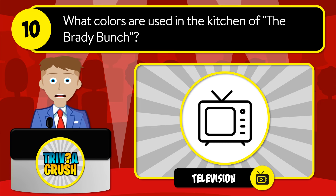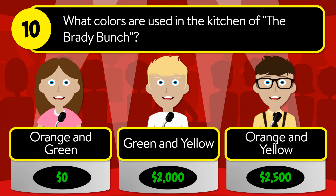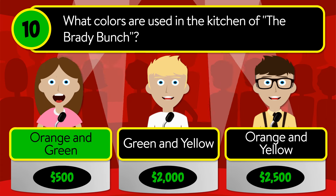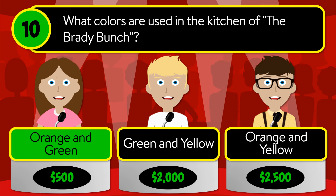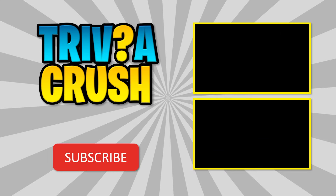Question number ten: what colors are used in the kitchen of The Brady Bunch? Was it orange and green, green and yellow, or orange and yellow? The correct answer is orange and green.